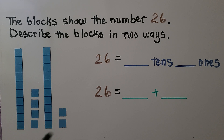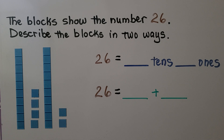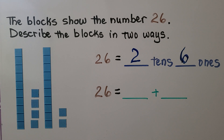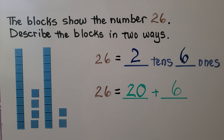The blocks show the number 26. We need to describe the blocks in two ways. How many strips of 10 do we see? I see two tens. How many ones do we see? I see six ones. We can write 26 in expanded form: two tens is 20, and six ones is 6. So 26 is equal to two tens and six ones, and 26 is equal to 20 plus 6.